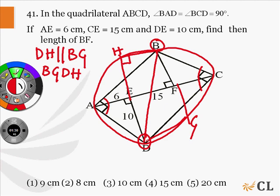Since BD is the diameter and DH is parallel to BG, BGDH will be a rectangle.